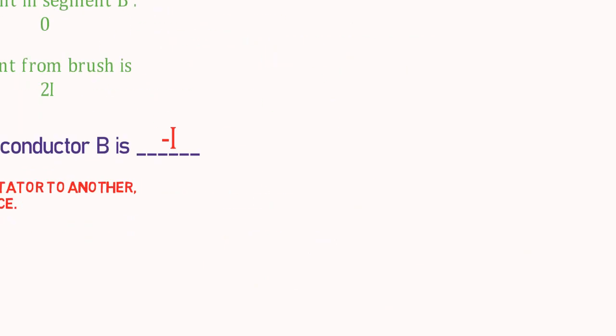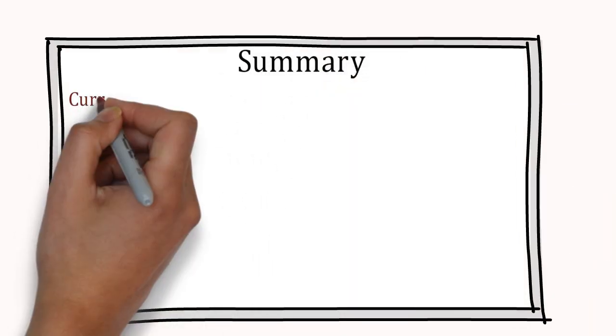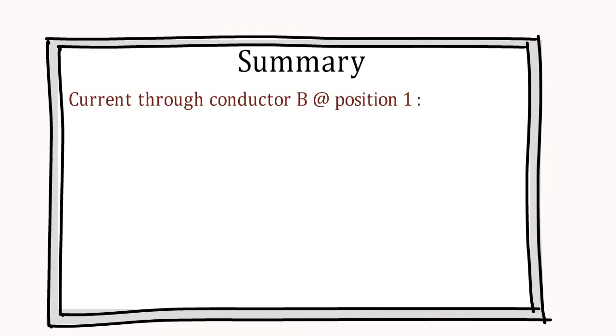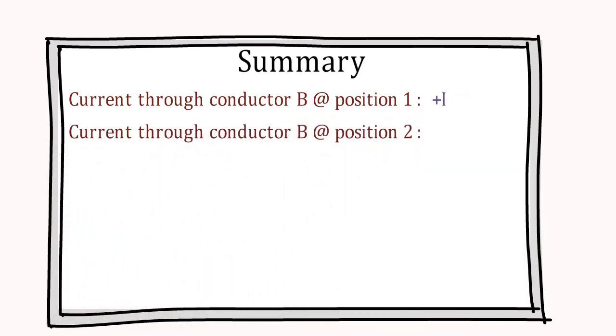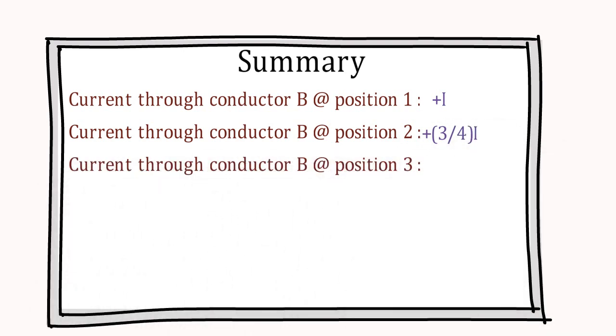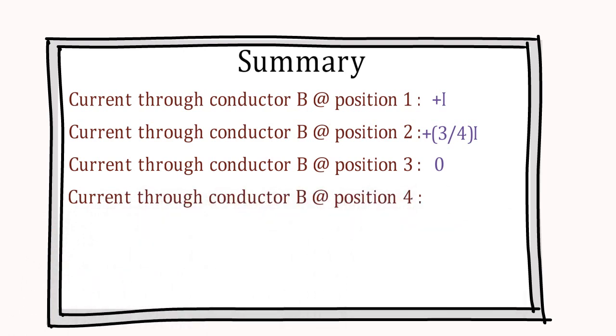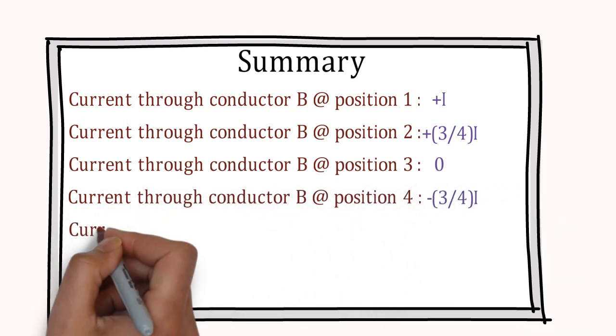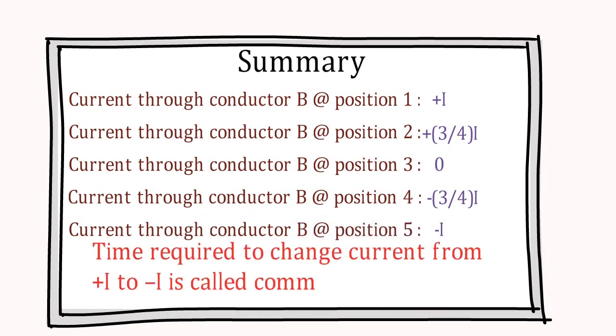Now, after these 5 steps, commutation process can be summarized as follows. At first position, current in conductor B is I and as position is getting changed, this current is also changing. And finally, at the last position, it will become negative I. Moreover, time required for this process is called commutation time.